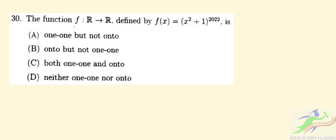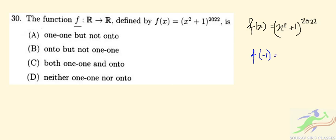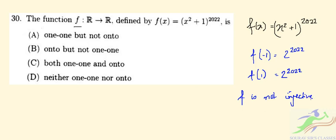Question number 30: the function F from R to R is defined by F(x) = (x² + 1)^2022. We check injectivity: F(-1) = (1+1)^2022 = 2^2022 and F(1) = (1+1)^2022 = 2^2022 as well. Since F(-1) = F(1) but -1 ≠ 1, F is not injective.